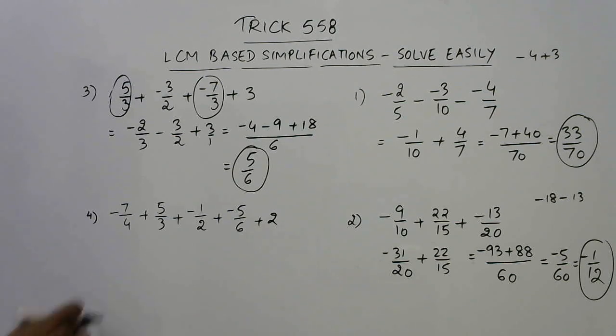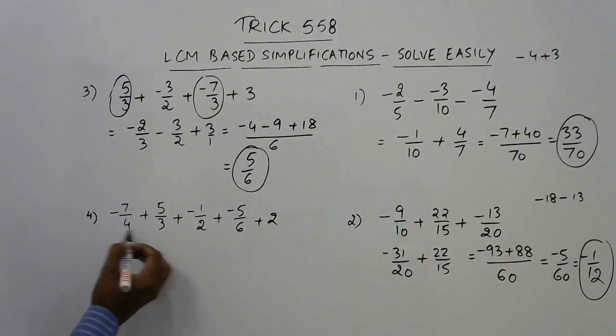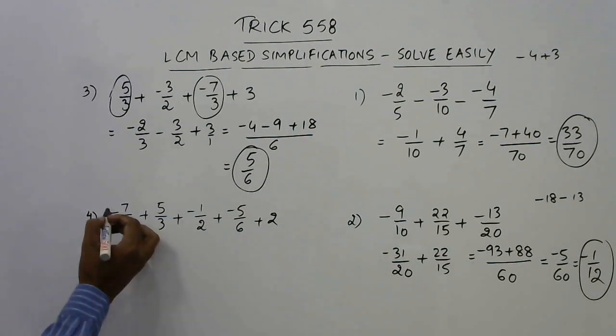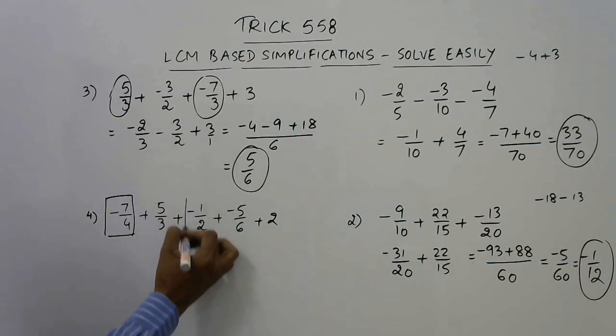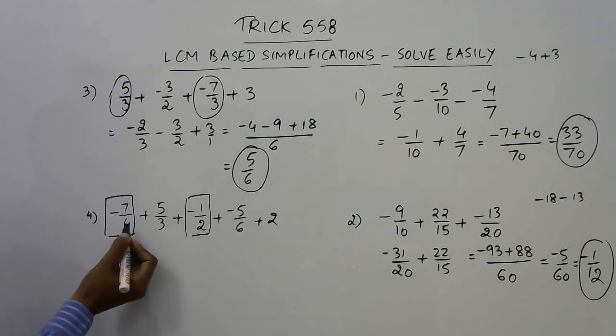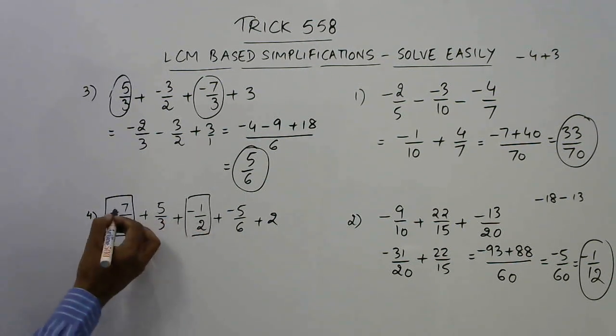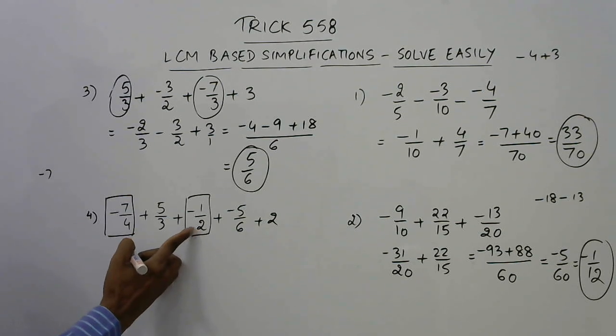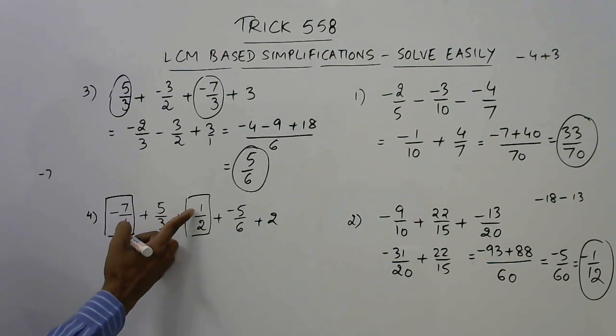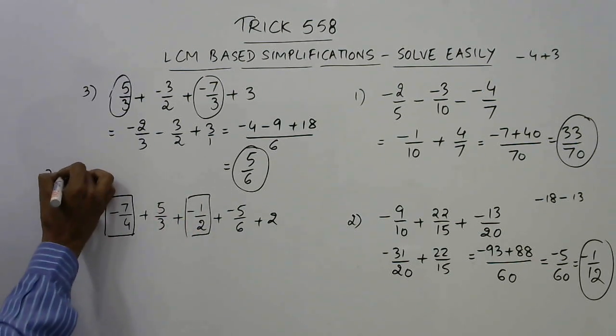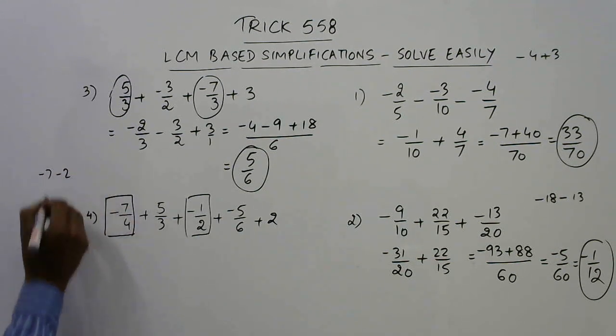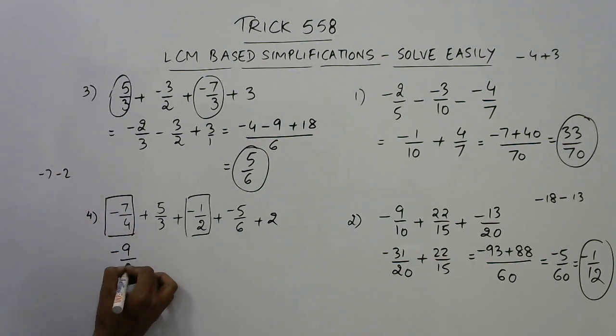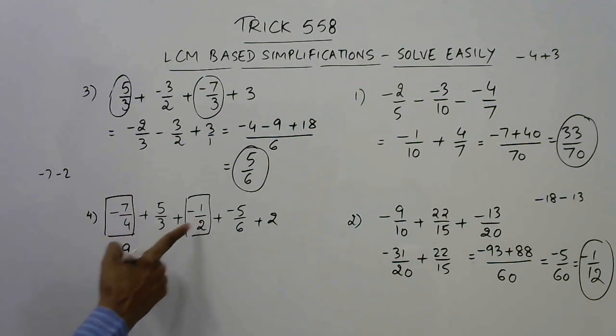Finally, we have a question in which I have taken 5 terms. Don't just blindly take the LCM of first 2. Consider the first one and the third one. 2 divides 4 exactly. So, minus 7 and if you multiply 2 by 2 you get 4, so multiply this also by 2 minus 2. Minus 7 minus 2 is minus 9 upon 4 that is the simplified form of first and third.